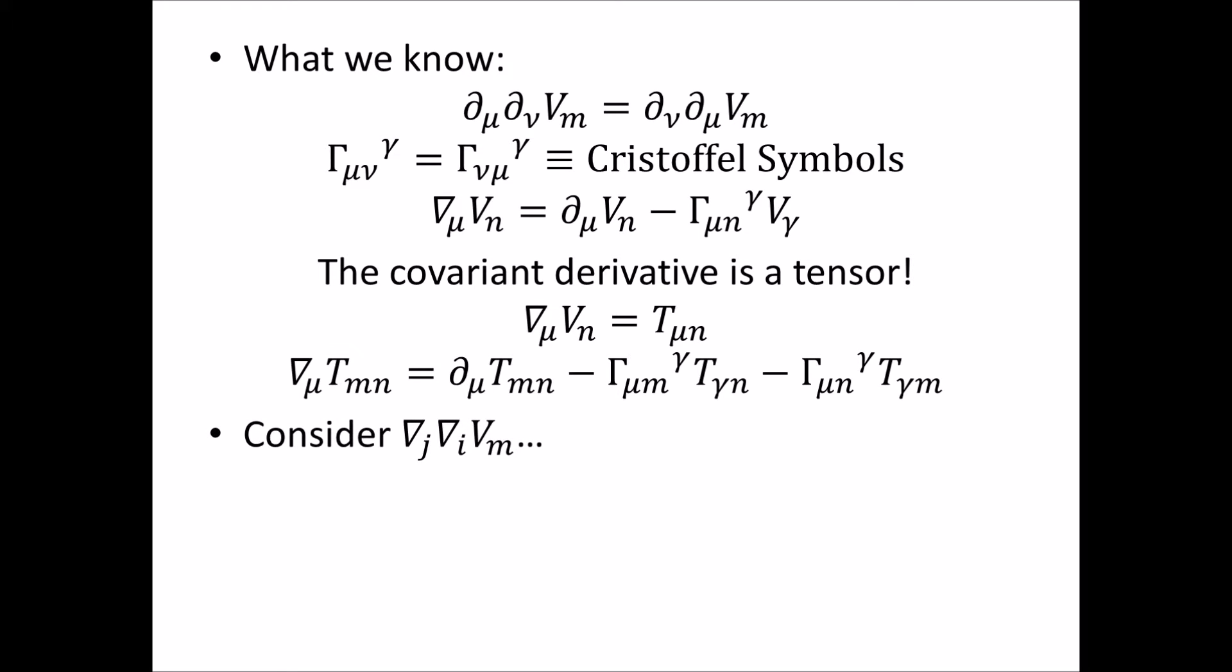So the idea now, if you want to move towards deriving the Riemannian curvature tensor, you need to consider the second covariant derivative acting on a vector with a single covariant index. So it's the Jth covariant derivative of the Ith covariant derivative of V. So using some of the things that we know already, we can think of the expression like this. You can think of it as the Jth covariant derivative acting on some other tensor TiM, where TiM is just the I covariant derivative of V.